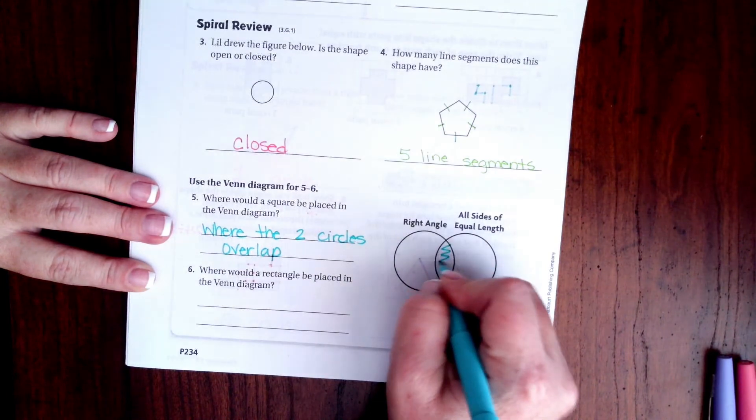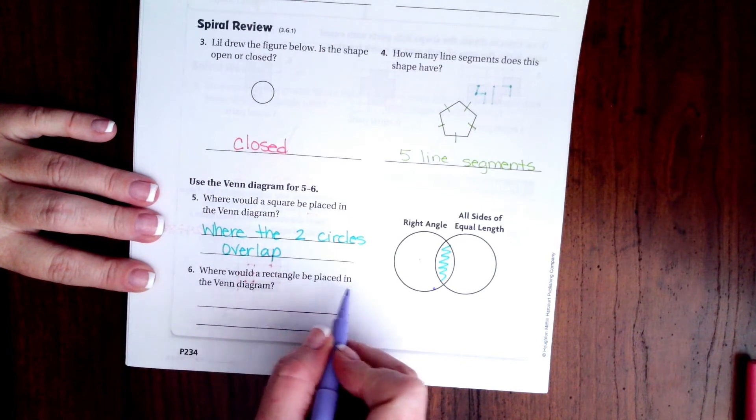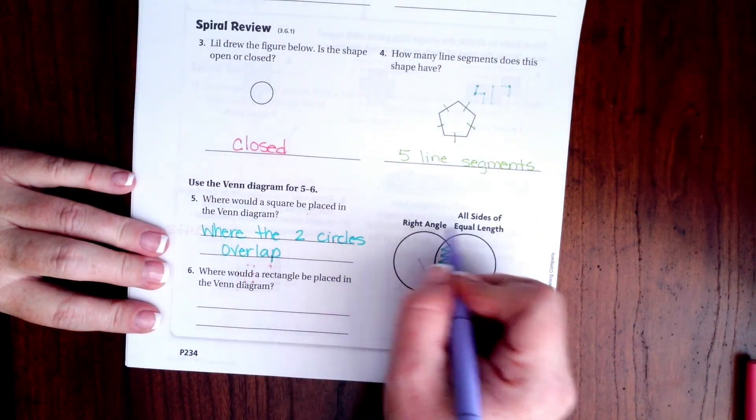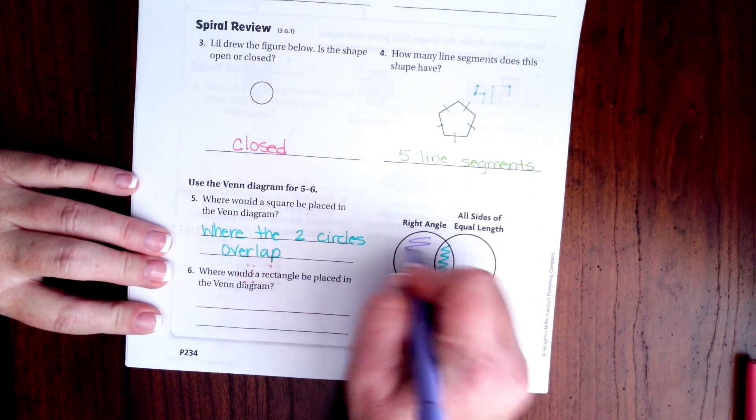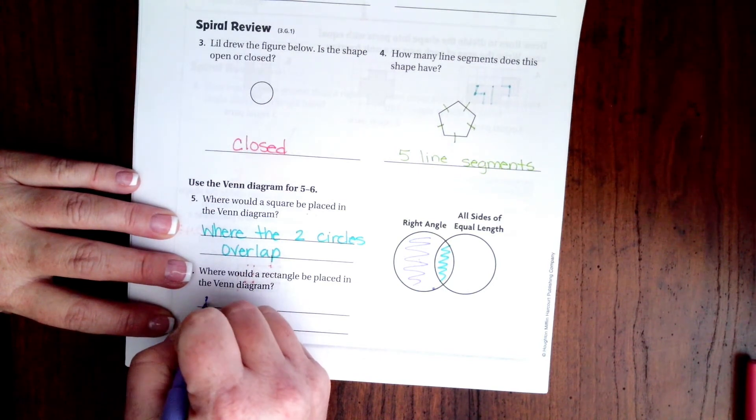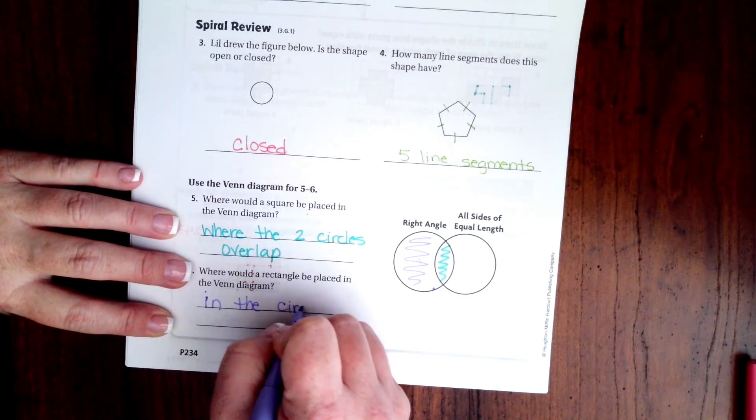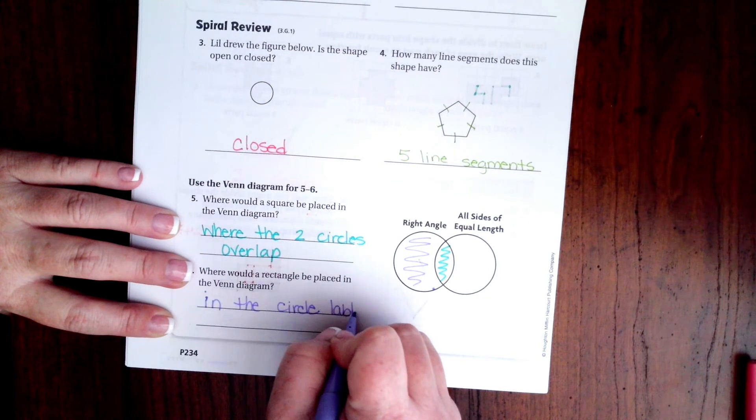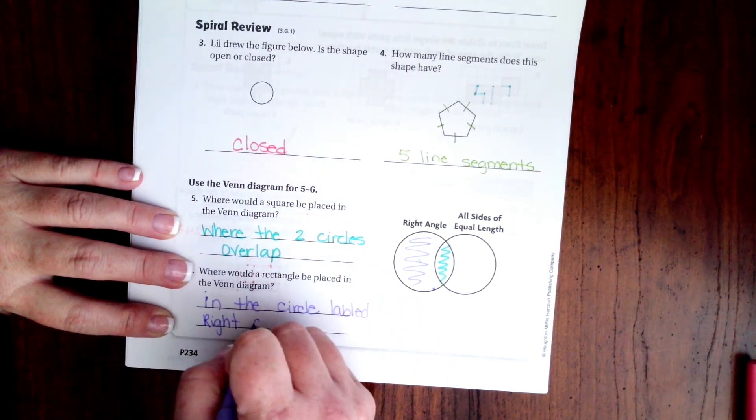Okay, where would a rectangle be placed on the Venn diagram? Okay, there are right angles but not all of the sides are of equal length, so it would be over here in the right angle, in the circle labeled right angle.